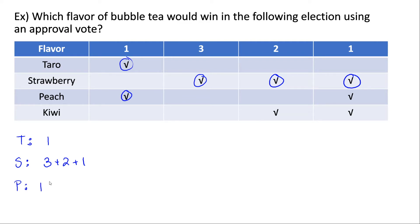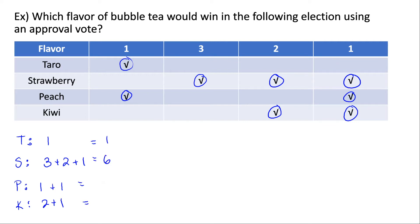One more voter also approved of peach, giving them another vote. For kiwi, the last candidate, we have two voters that approve and then one voter that approves. Adding everything up: tarot has one vote, strawberry has six, peach has two, and kiwi has three. So strawberry ended up with the most votes and wins using the approval method.